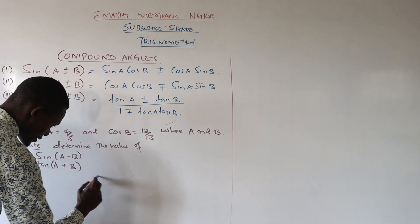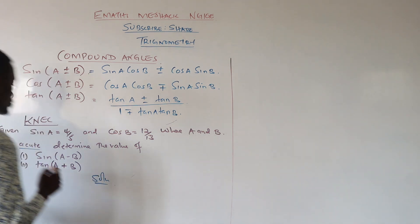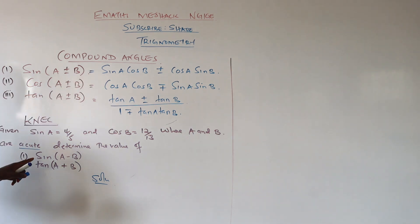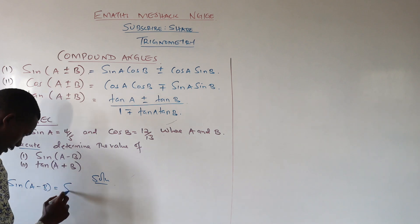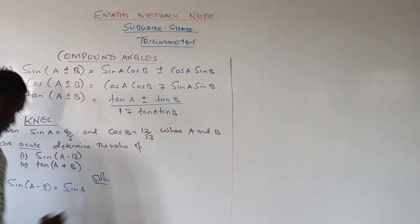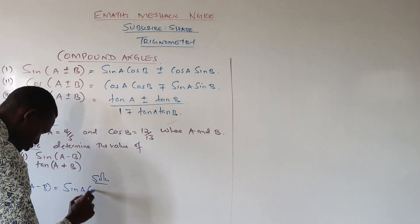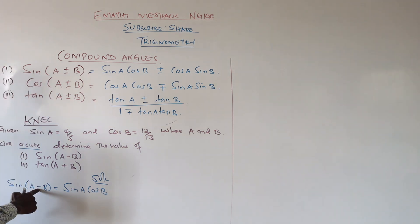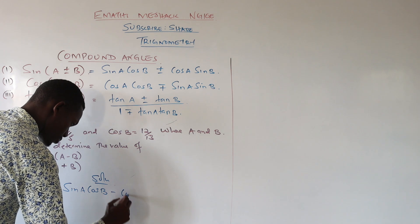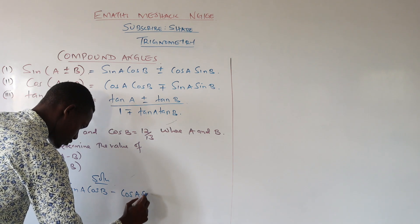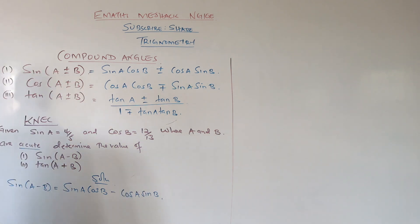For the solution, we apply what we have. Sine of A minus B expands to sine of A times cos of B, minus cos of A times sine of B. That is your expansion.